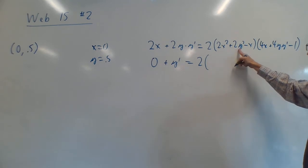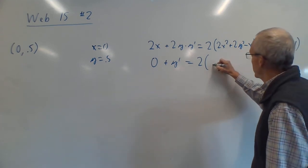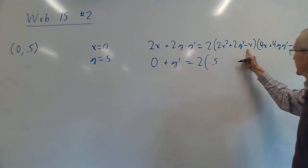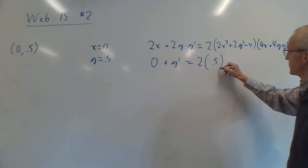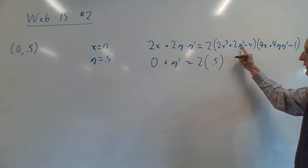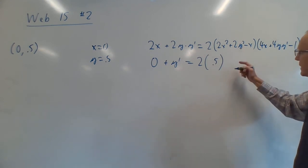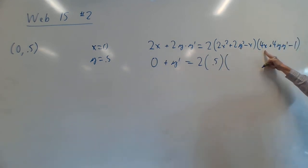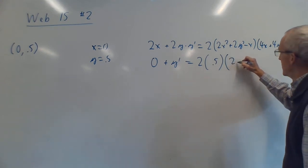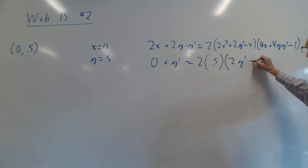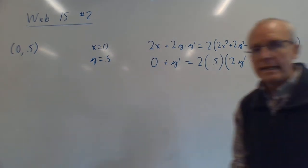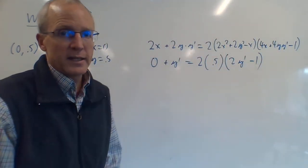2 times 0.5 is 1, so that's just y'. Equals 2 times... x is 0, y is 1/2, so 2 times 0.5² is 0.5, so this whole thing in parentheses is just 0.5, times x is 0, 4 times y which is 1/2, 0.5, so that's 2, so 2y' - 1. Okay, way easier now we can do the algebra and solve for y'.